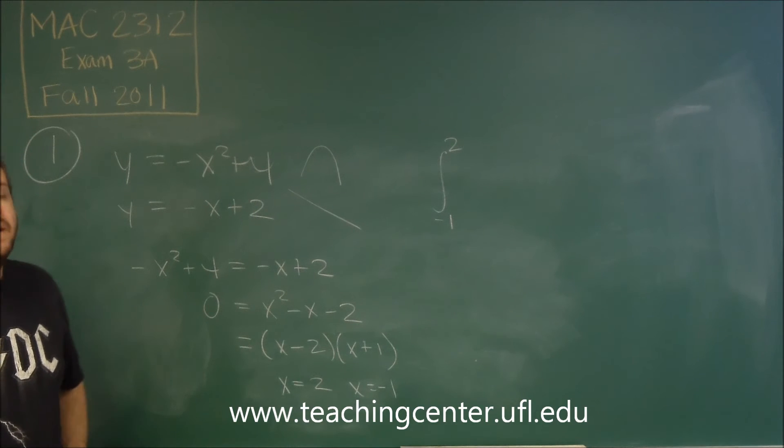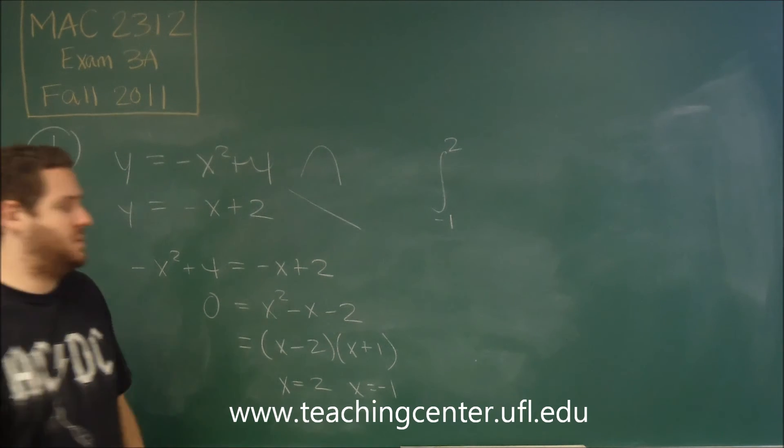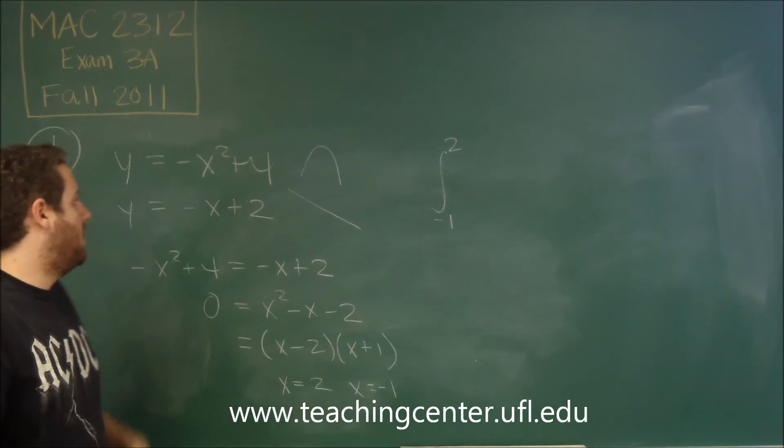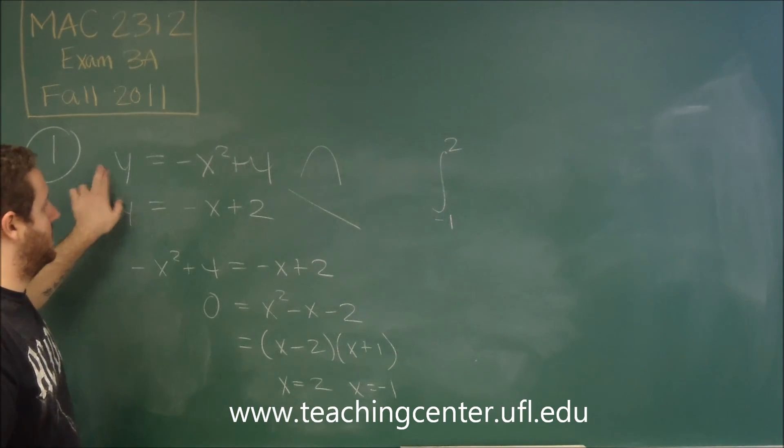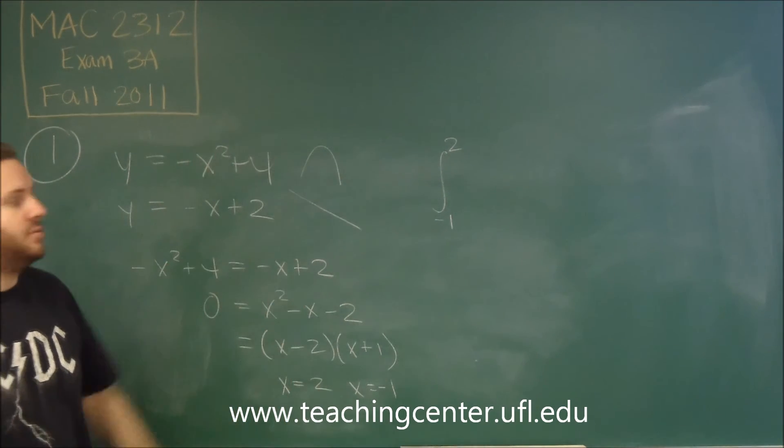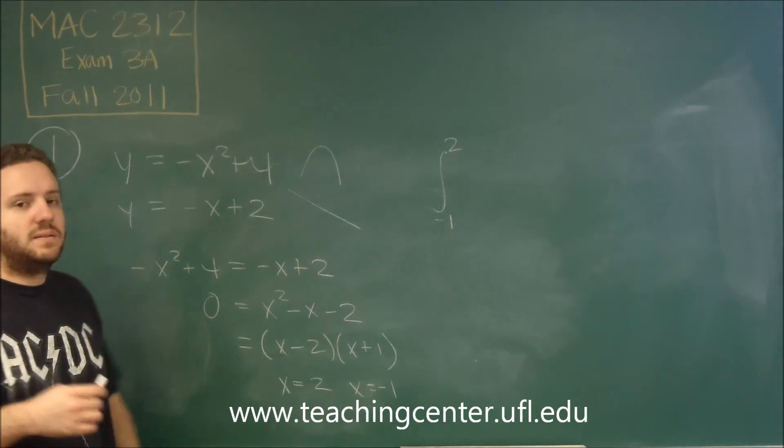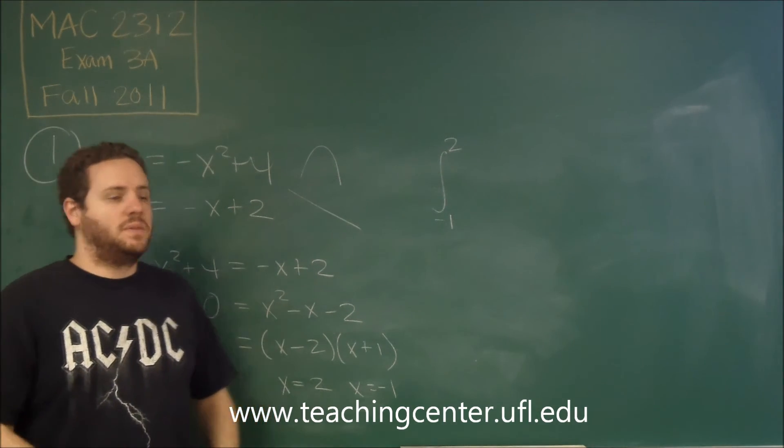But one way you can test that is to just plug in some number that's in between these two, so let's say zero. If you plug in zero, you can see that the parabola gives you a higher value, so you know it's above. So then we need to subtract the lower function from the higher function.